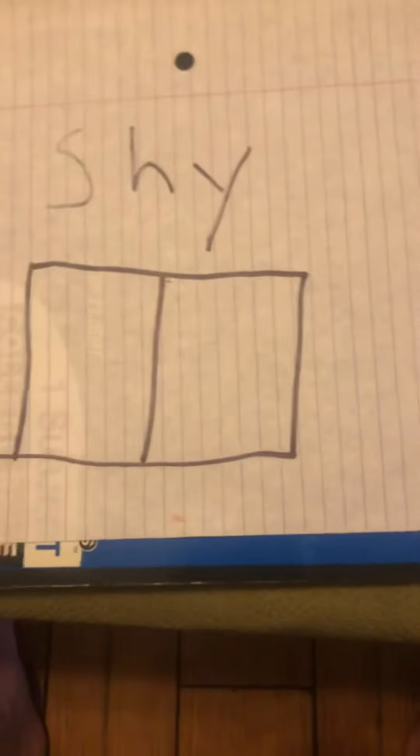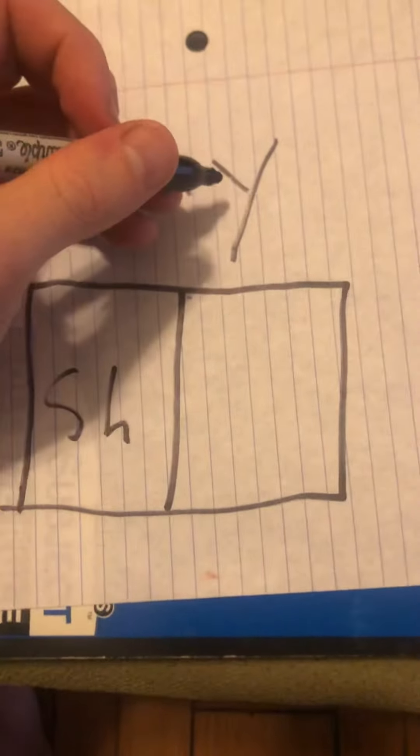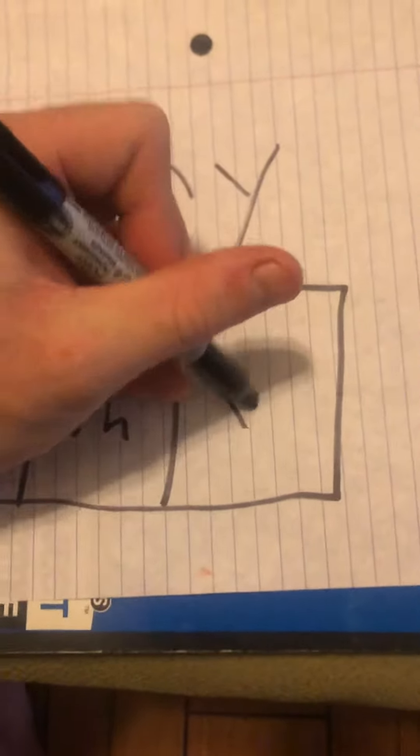One word is shy. How would you break this apart? Shy. You would pair the S and the H. And then that leaves the Y. Is it a long E or a long I?